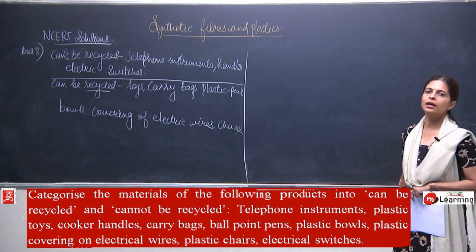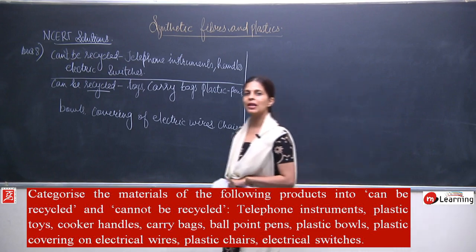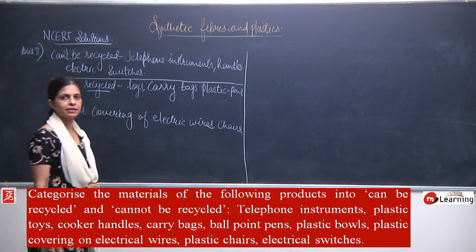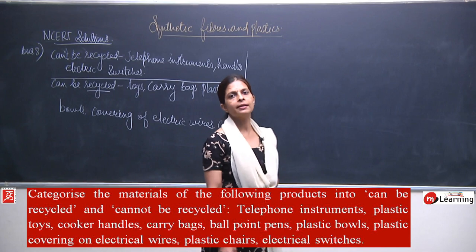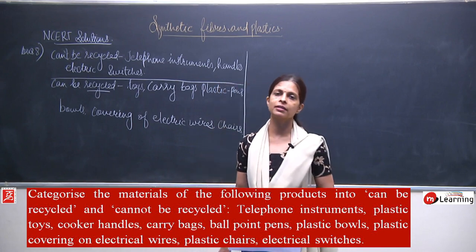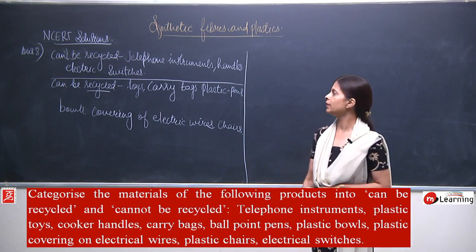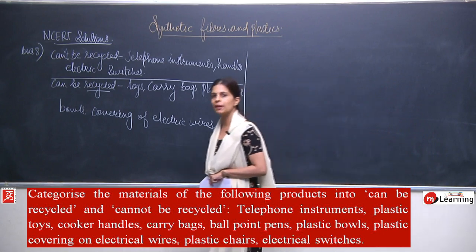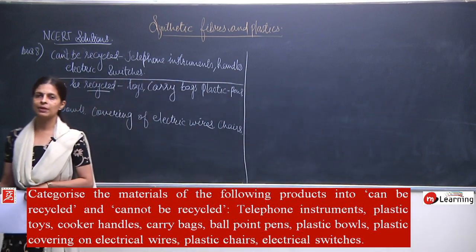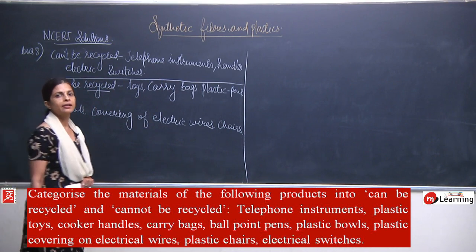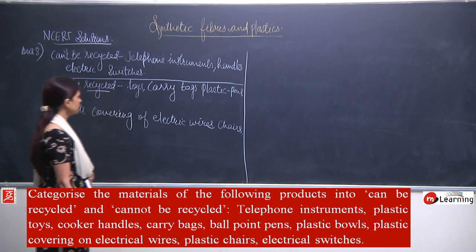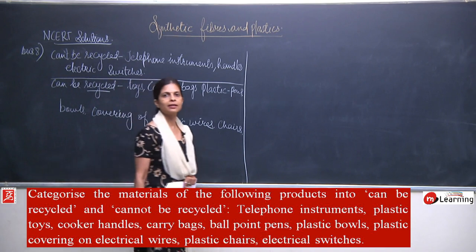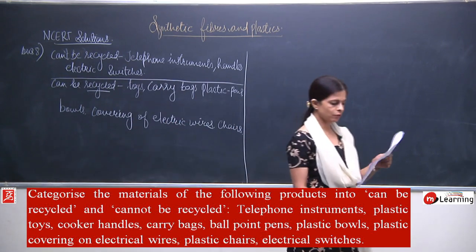The list given had articles mixed together — some recyclable, some not. We sorted them: telephone instruments, handles, and electrical switches cannot be recycled. The wire covering, carry bags, toys, bowls, pens, and plastic chairs can be recycled. With this, we move to question number 9.